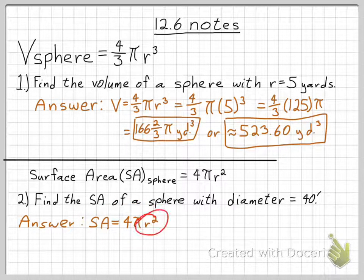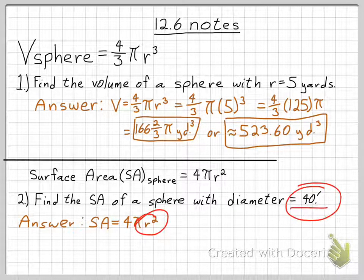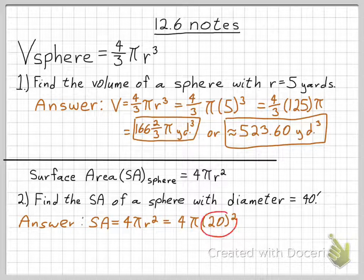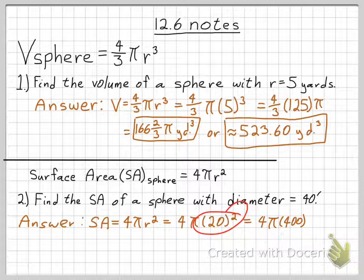And again, you start off with the formula for surface area of a sphere is 4 pi r squared. And the radius is half the diameter. So if that diameter is 40, the radius is 20. So that's where I get the 20 from. And then 20 squared is 400.